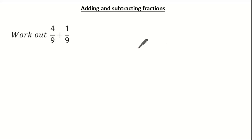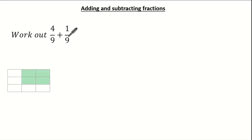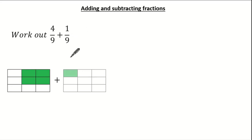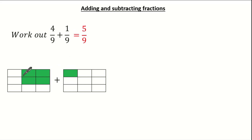Hello everyone and welcome to this tutorial on adding and subtracting fractions. Let's start easy. Here we're asked to add 4 ninths and 1 ninth. This is super easy and gives us a final answer of 5 ninths, because you can see 5 ninths are shaded overall. This is easy because the portions are all the same — because the denominators are the same, so we can easily add or subtract.